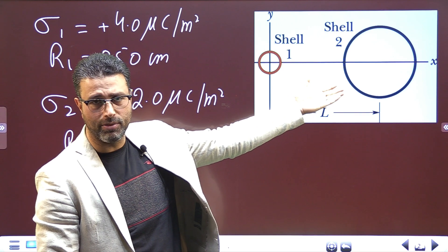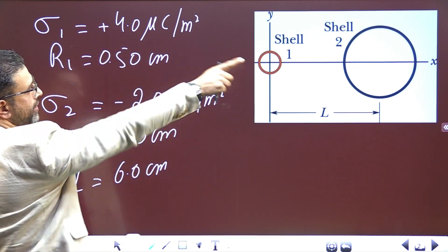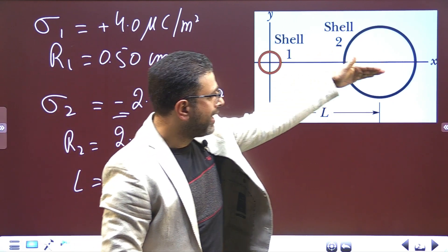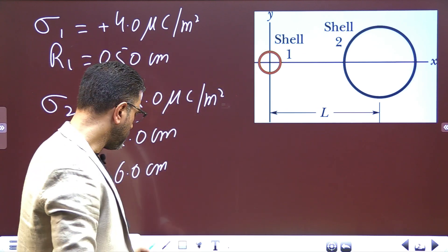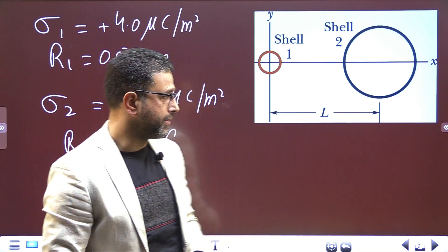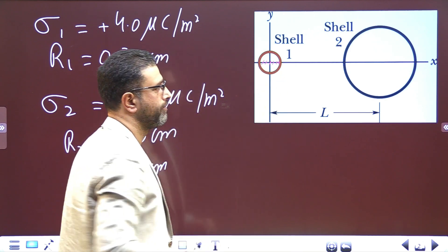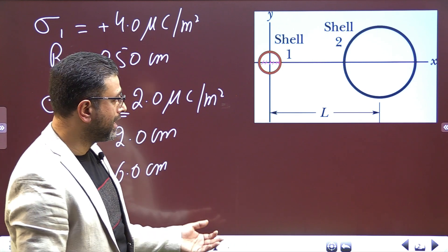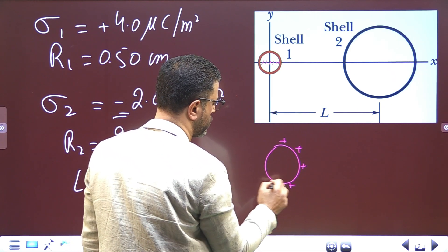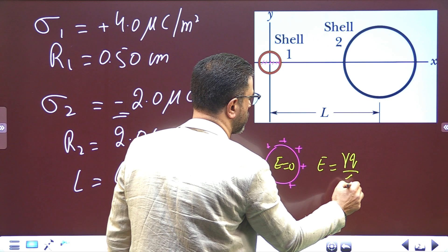Sphere one is positively charged and sphere two is negatively charged — that's important. We need to find a point on the x-axis where the net field is zero. I'll first rule out two regions where the field cannot be zero. From problem 45, we know that the field inside a uniformly charged spherical shell is zero — positive or negative, only direction changes. Outside, it behaves like a point charge at its center.